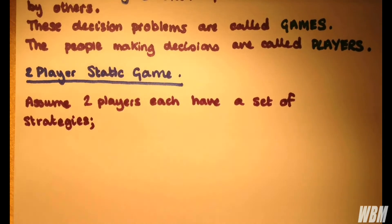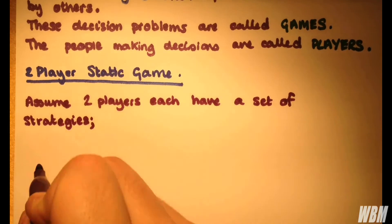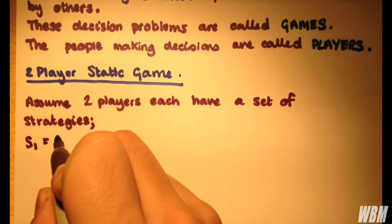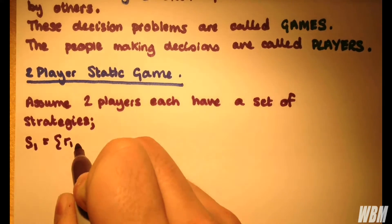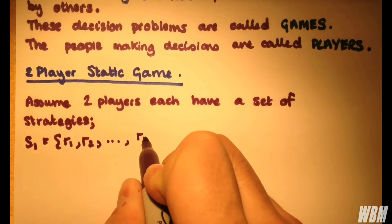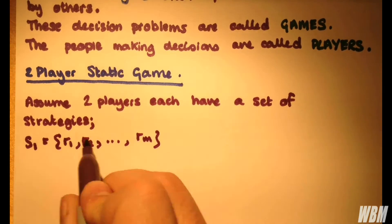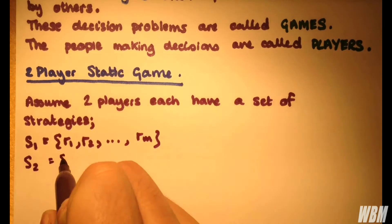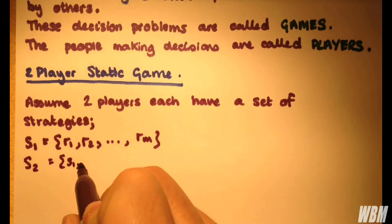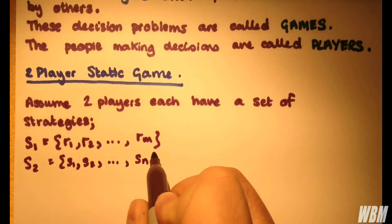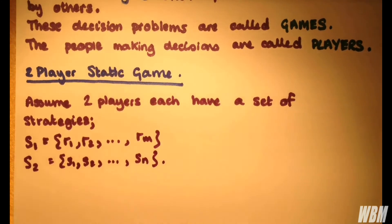Player one has a strategy set S1 with the following strategies: R1, R2, all the way through to Rm. So he has m available strategies. And similarly, player 2 has strategy set S2 with S1 all the way through to Sn available strategies.